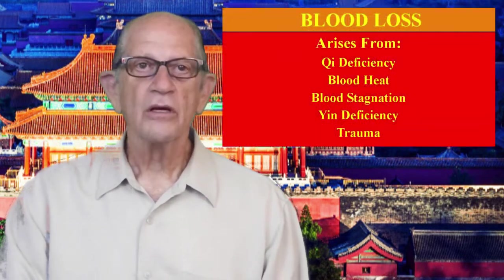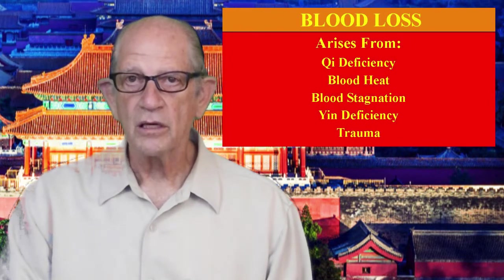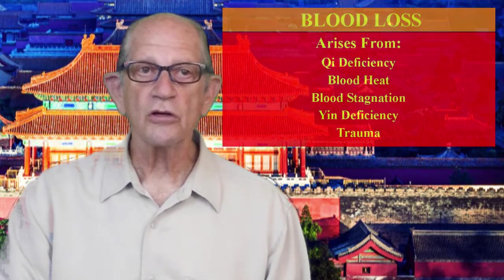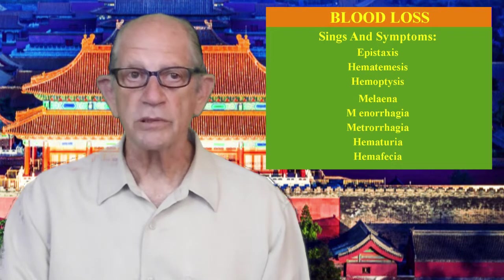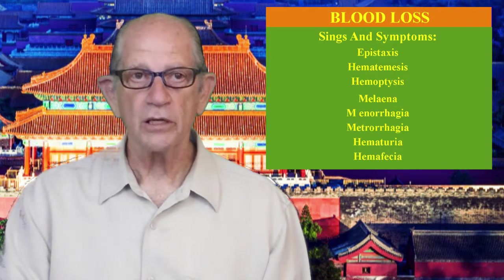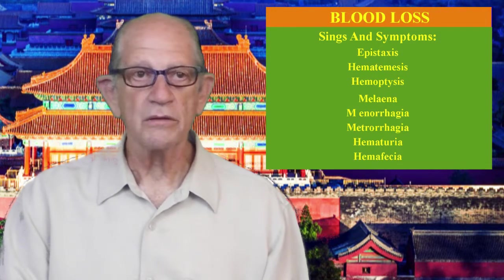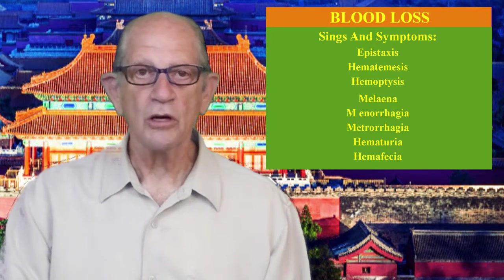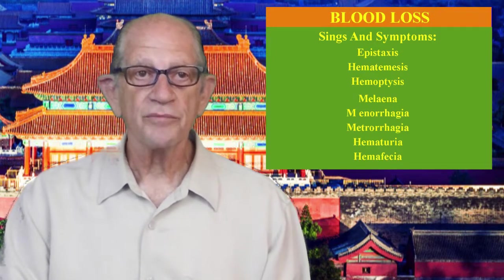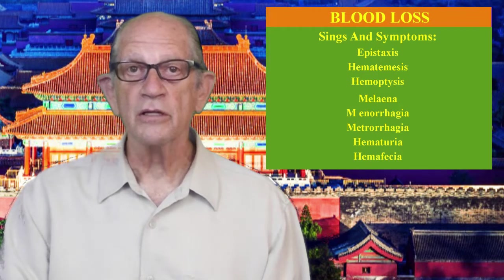Blood loss can arise from deficient qi, which is unable to hold blood in the vessels, blood heat, blood stagnation, yin deficiency, or trauma. Blood loss can manifest as epistaxis (nose bleeding), hematemesis (vomiting blood), hemoptysis (coughing up blood), malena — which is dark sticky feces containing partly digested blood — menorrhagia (excessive menstruation), metrorrhagia (non-menstrual uterine bleeding), hematuria (blood in the urine), and hemophagia, which is fresh blood in the stool.